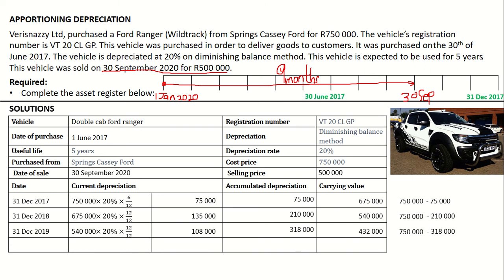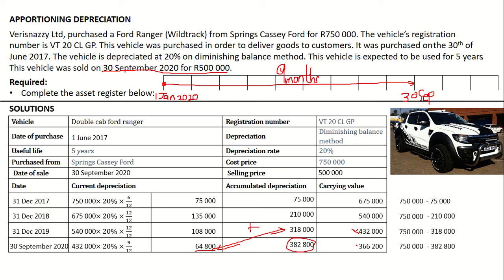Please note that we only used the vehicle for nine months in the 2020 financial year. The depreciation for 2020 will simply be $432,000 multiplied by 20% multiplied by 9 over 12. When you calculate this, it gives you the depreciation amount, and your carrying value will be $750,000 minus your accumulated depreciation, giving a carrying value of $366,200.